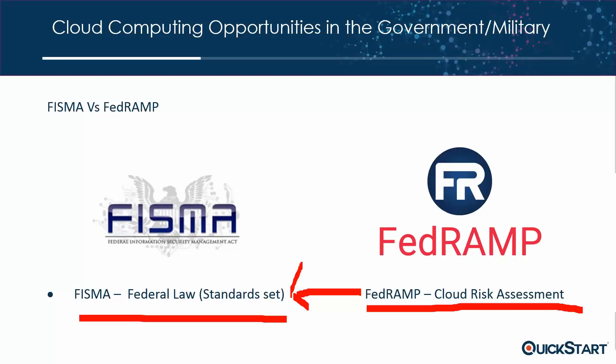People confuse FISMA and FedRAMP as the same thing. FISMA is a law — a congressional order signed by the president. FedRAMP is a directive by the Office of Management and Budget to have everybody in the federal government doing the same thing when it comes to cloud. That's really the high-level difference.